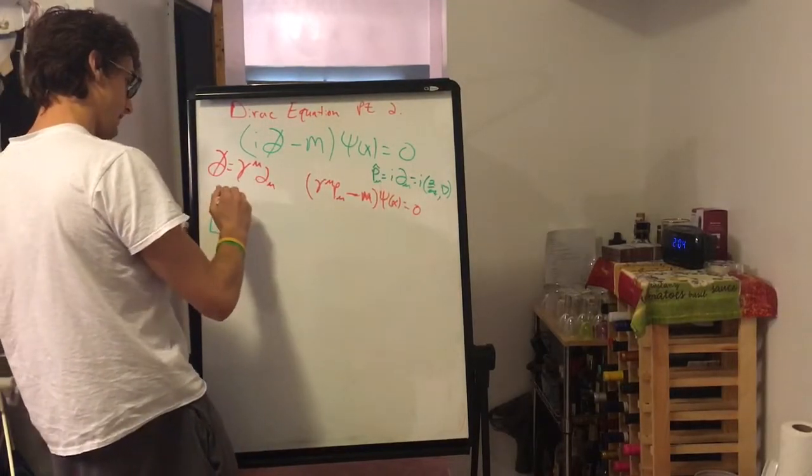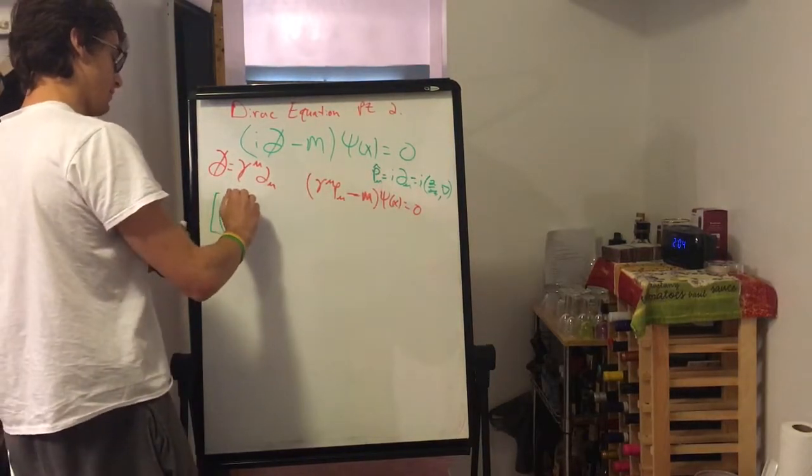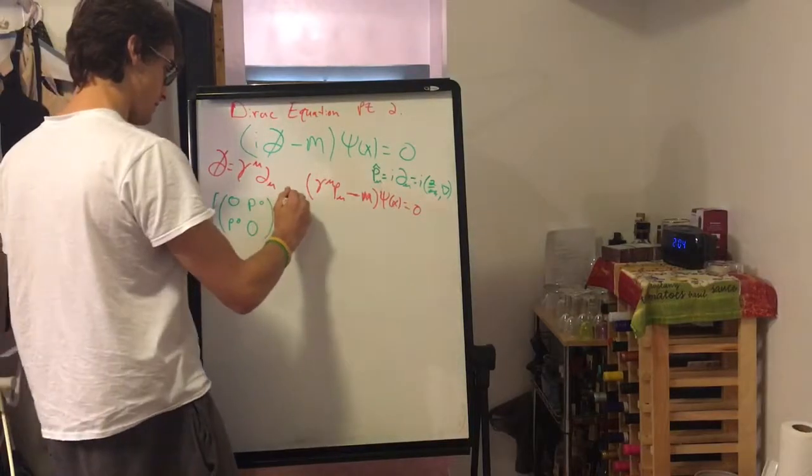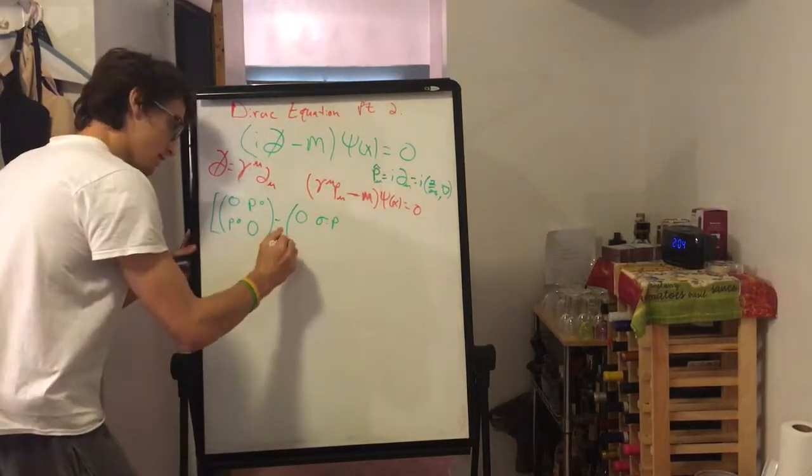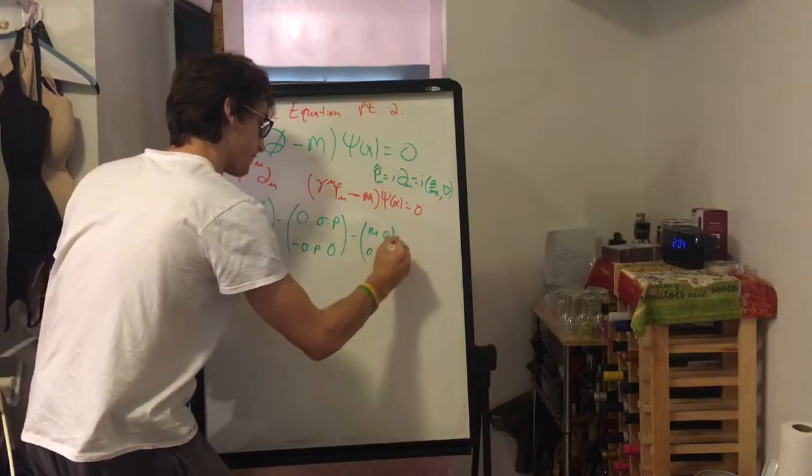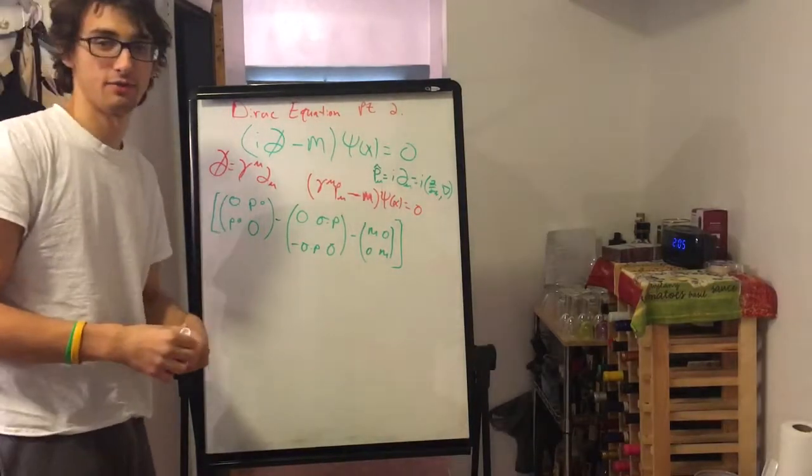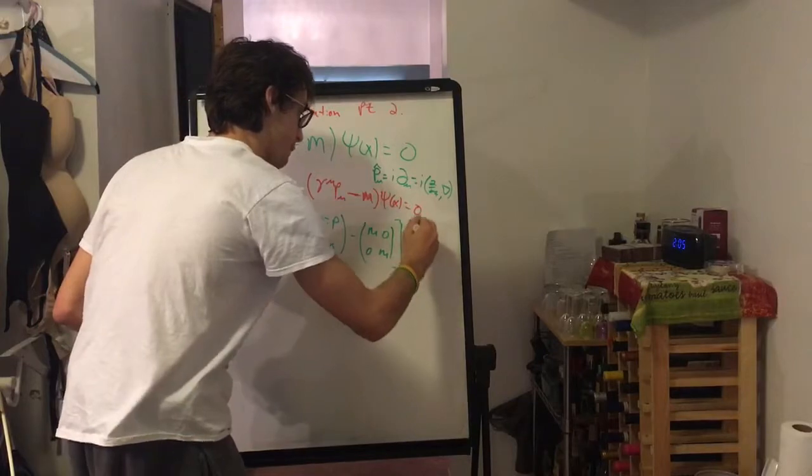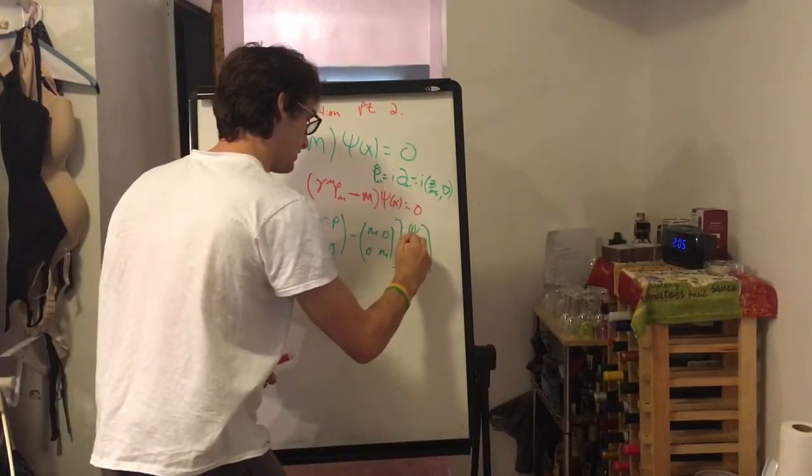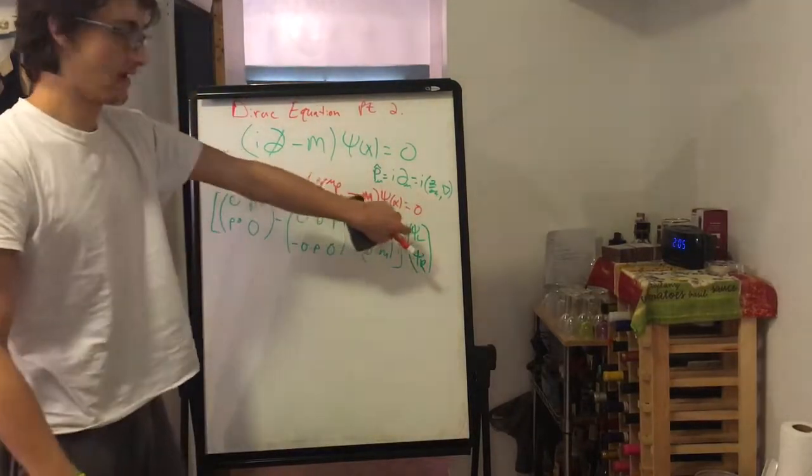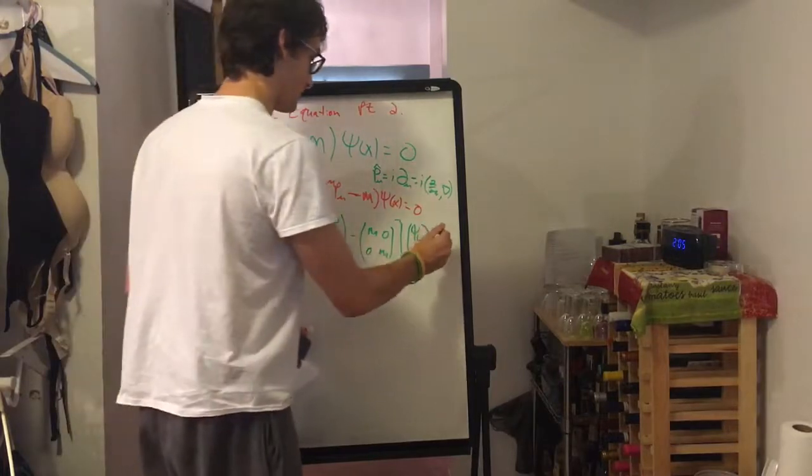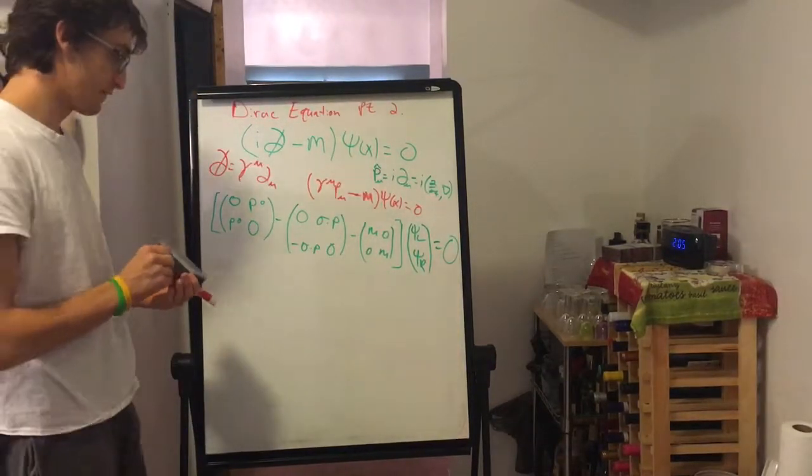So expanding it, we get the time component of the momentum, the momentum, which is just the energy, minus sigma P minus M, zero, zero, M. And this is going to be acting on what's known as a Dirac spinor. And it's a four column matrix. And we could represent the upper two columns with psi L, two columns with psi R. And these are two element column matrices. And these are called Weyl spinors.